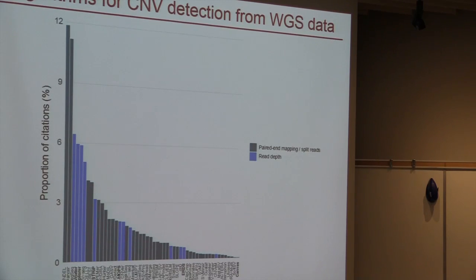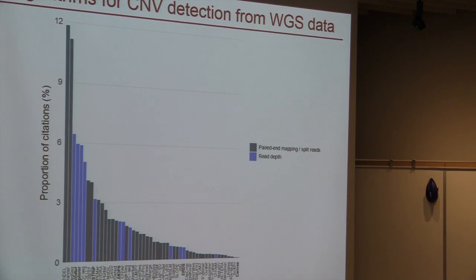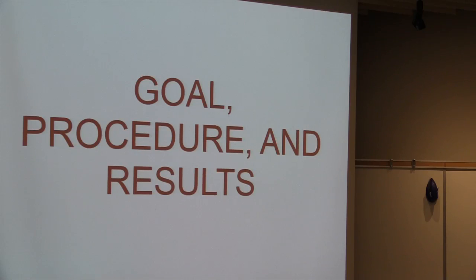We're focusing on methods that use read depth as their strategy for detecting CNVs. The idea is that read depth-based methods look at differences in read depth across genomic regions compared to the overall average. If a genome has an average sequencing depth of 30x but a region has only 15x depth, that suggests a heterozygous deletion. Similarly, if a region has 45x depth, that suggests a duplication in that region. There's no clear standard method right now.